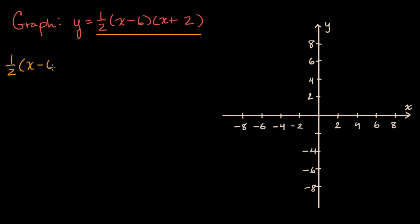One half times x minus six times x plus two is equal to zero. Now in previous videos, we've talked about this idea. If I have the product of multiple things and it needs to be equal to zero, the only way that's going to happen is if one or more of these things are going to be equal to zero. Well, one half is one half.